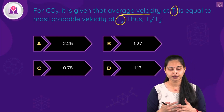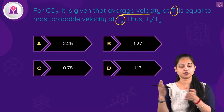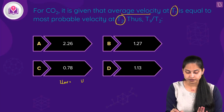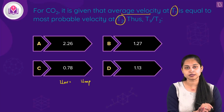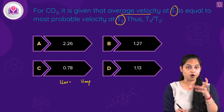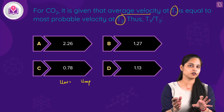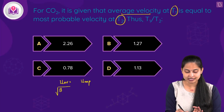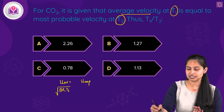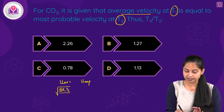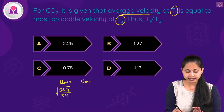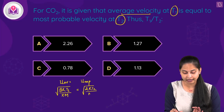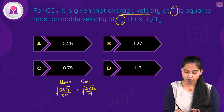Since average velocity equals most probable velocity, we write u_avg = u_mp. The formula for average velocity is √(8RT1/πm) and for most probable velocity it is √(2RT2/m). Setting them equal gives √(8RT1/πm) = √(2RT2/m).